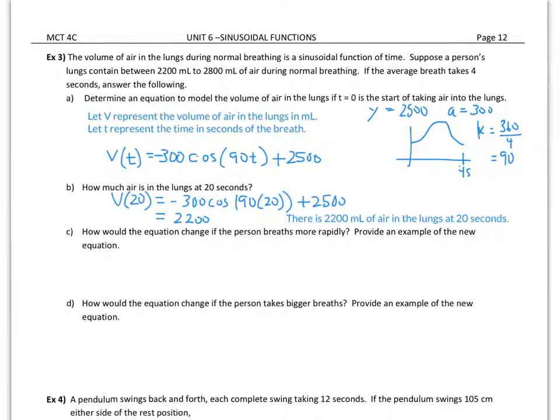Alright, when I put that in my calculator, I got 2200 milliliters of air in the lungs at 20 seconds. Now, how would the equation change if the person breathes more rapidly? If that's the only thing that is changing, what it means is we're taking less time for one breath to come in and out, so our period would change. That's going to change our K value.